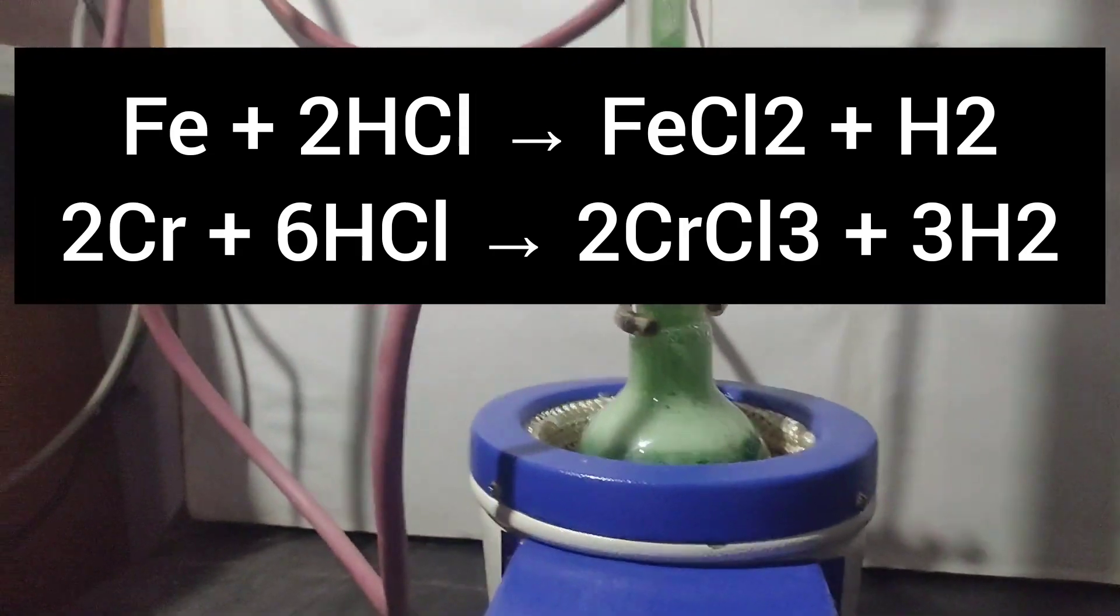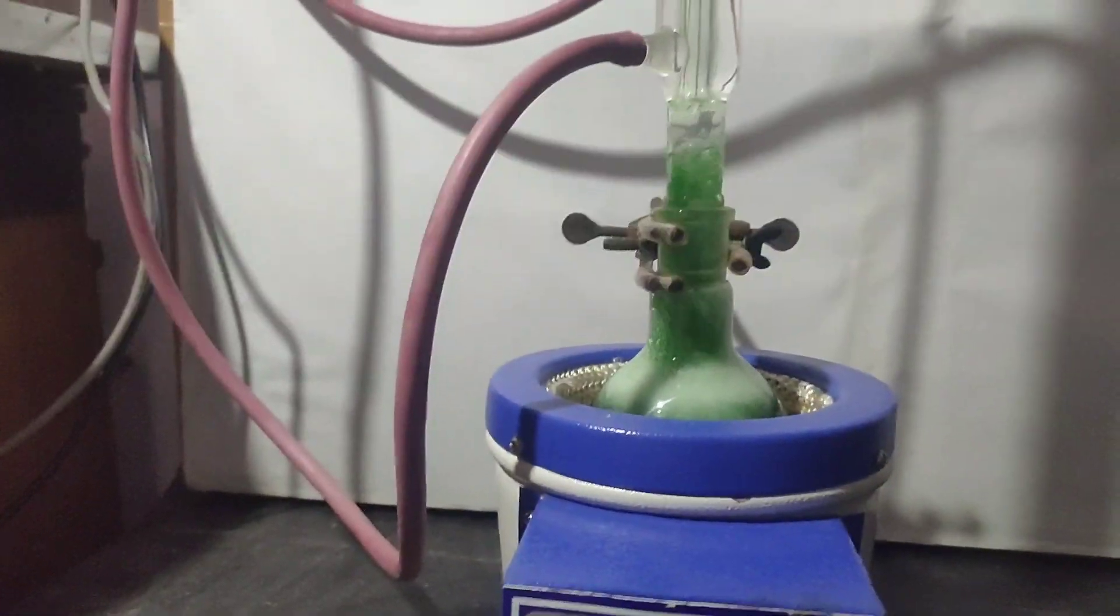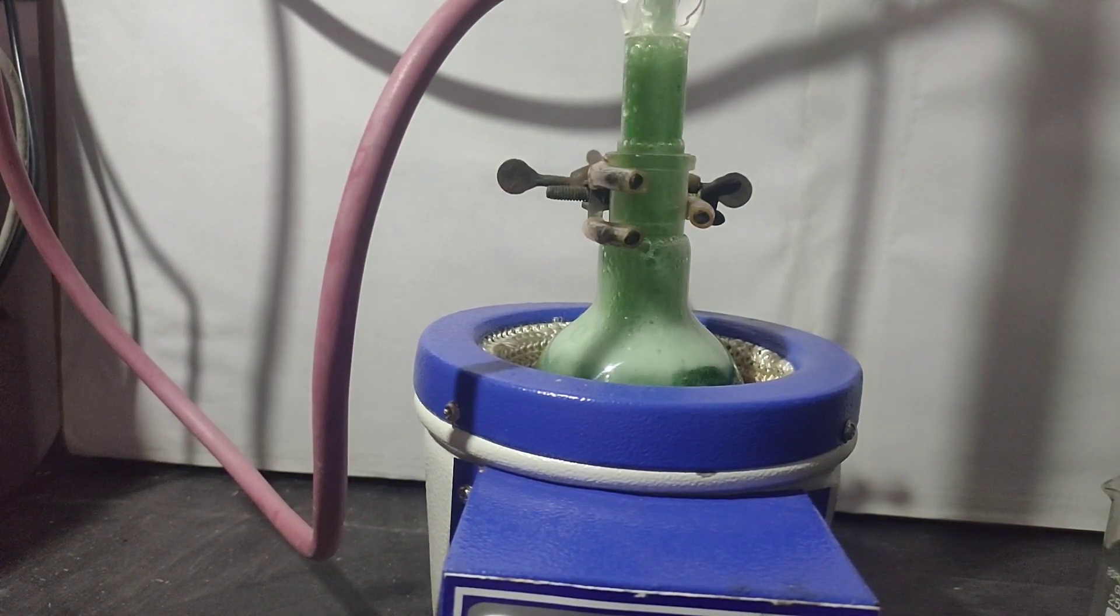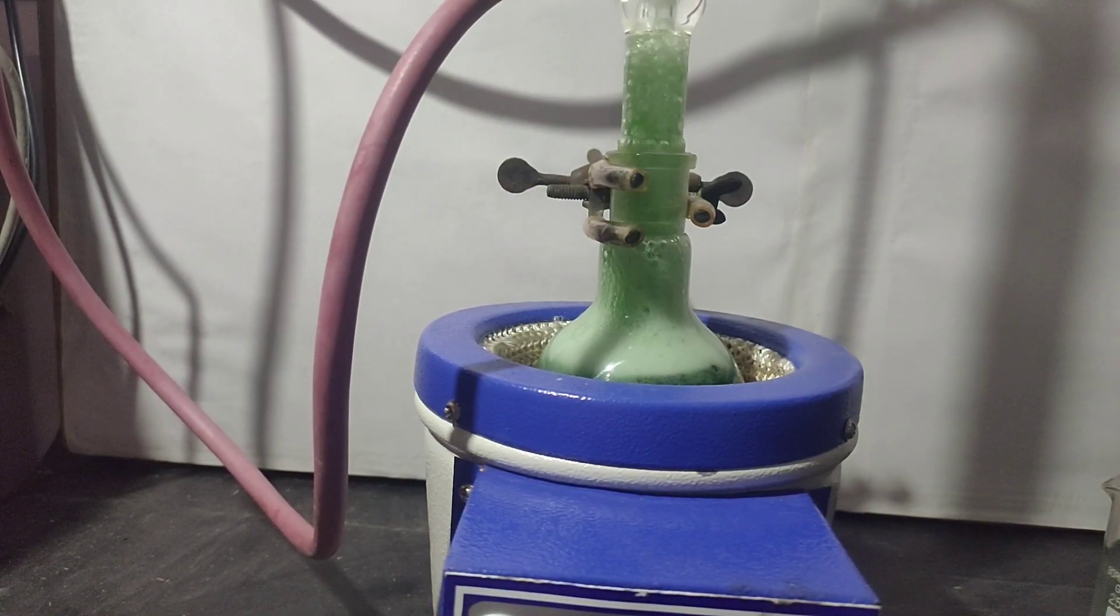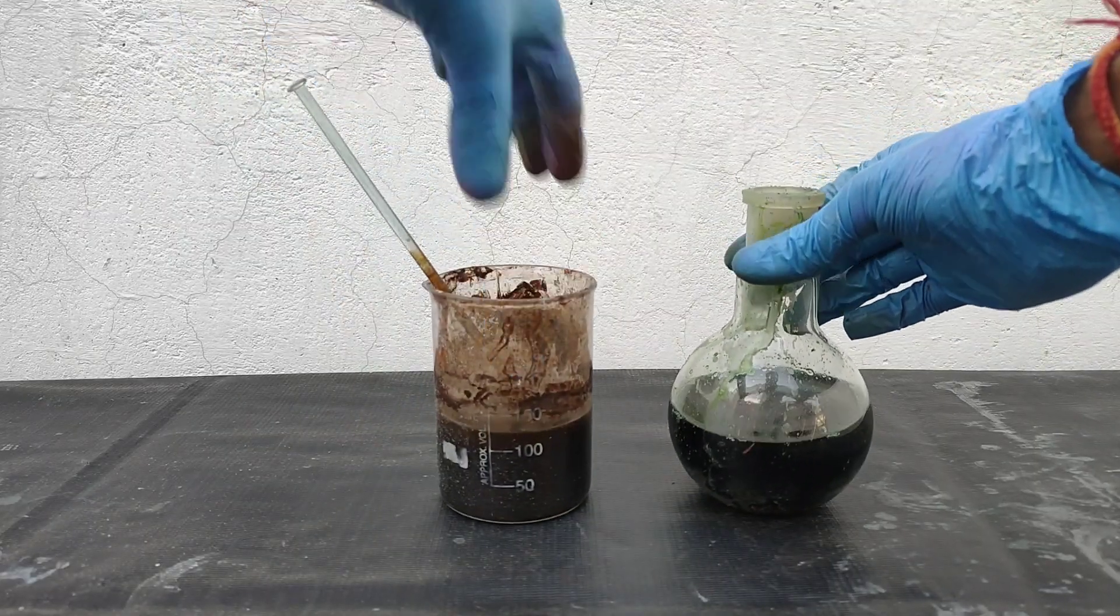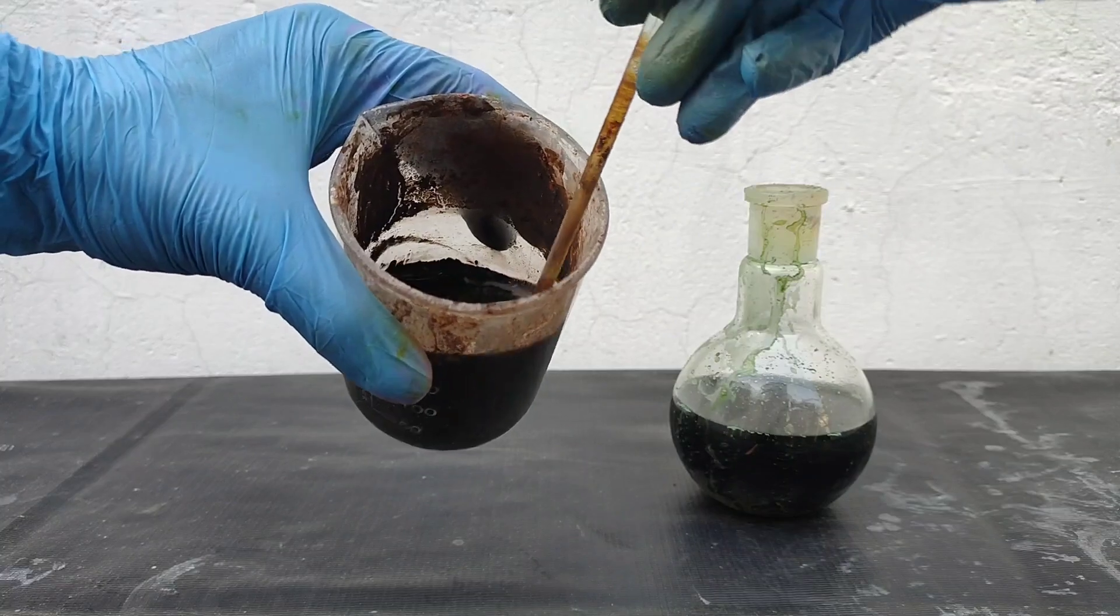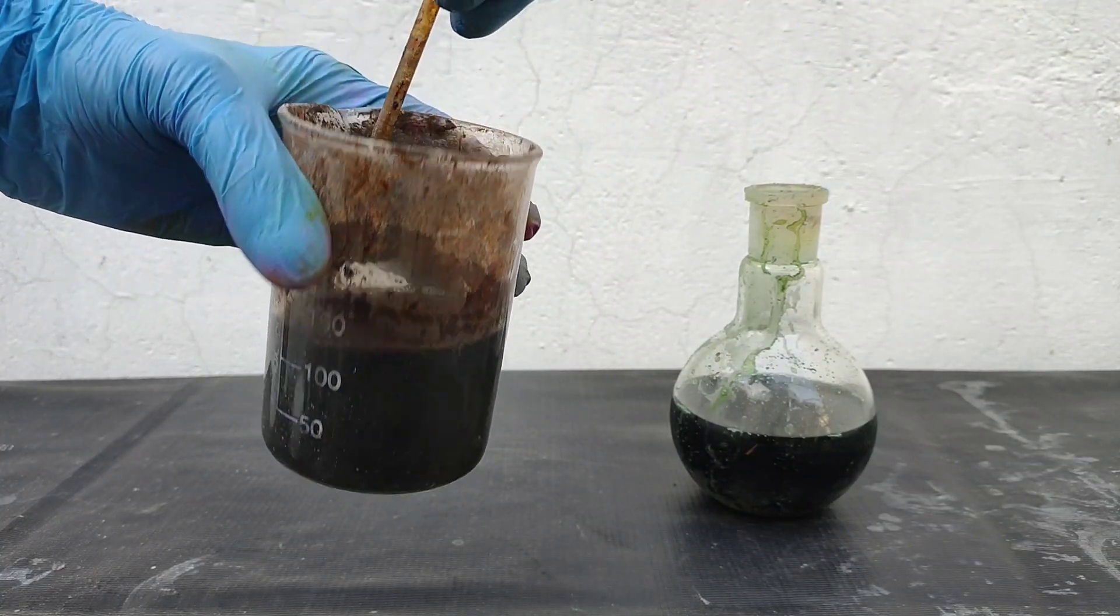After all the acid has reacted with steel and even on heating no evolution of hydrogen gas takes place, the reaction is over. Now in the left beaker I have a precipitate of iron and chromium hydroxide from electrolysis.